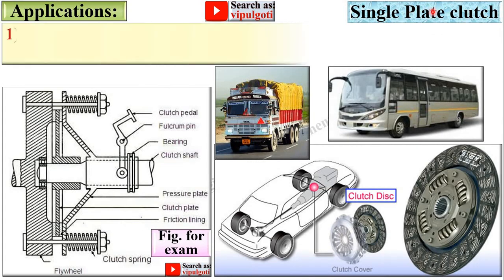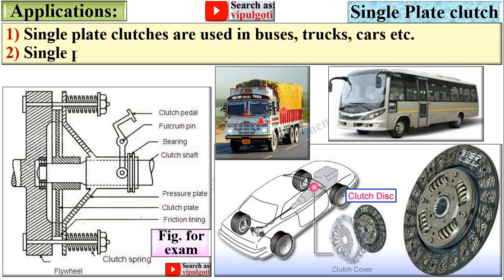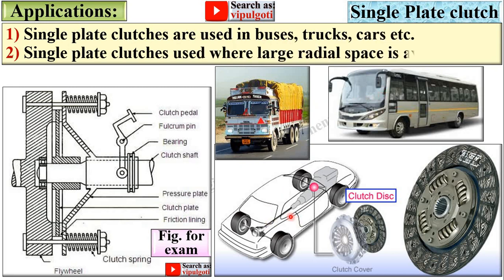Applications of the single plate clutch: single plate clutches are used in buses, trucks, and cars. The single plate clutch is used where large radial space is available — in the case of trucks and buses, large radial space is available, so the single plate clutch is suitable. This simple figure can be used in the examination for short notes on the single plate clutch.